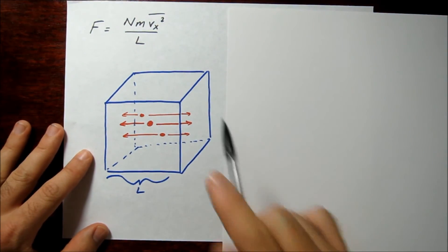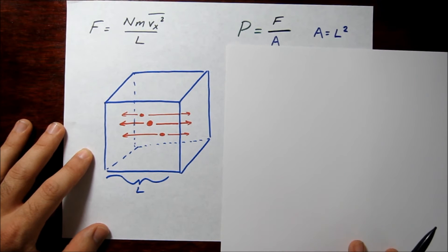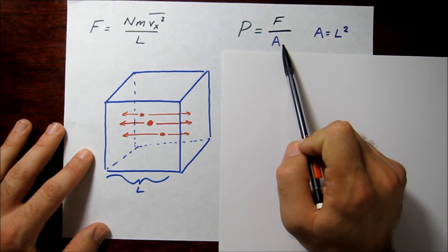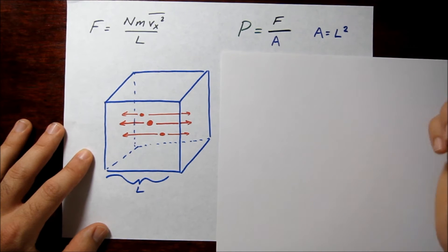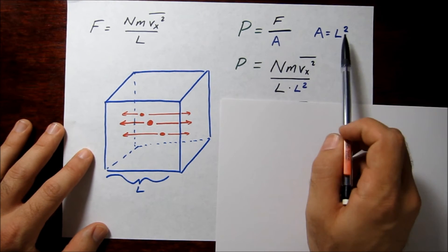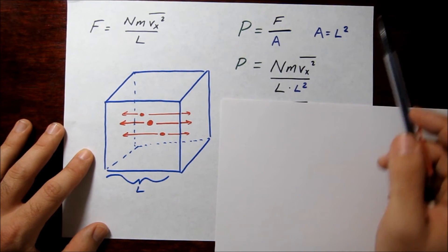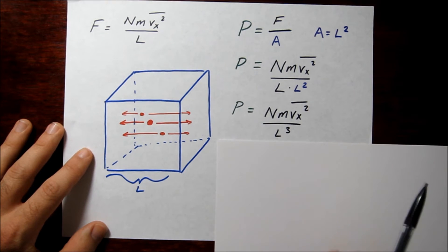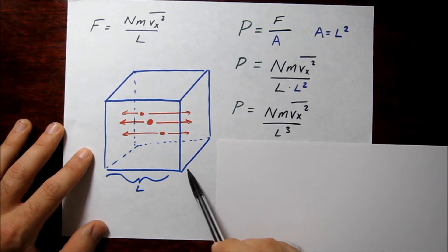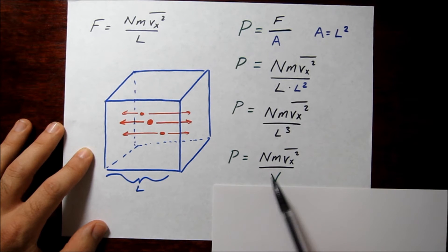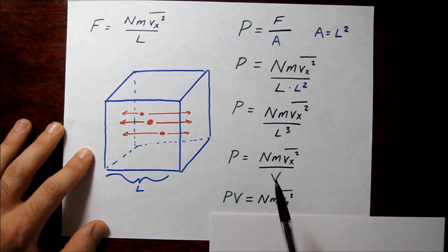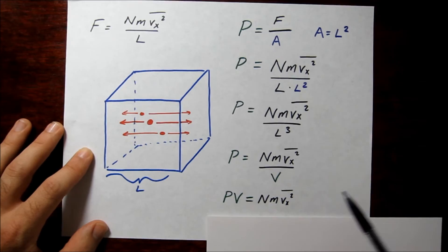Now we relate force to pressure. Pressure is defined as force per unit area. Since this is a cube of side length L, the area of any face is L squared. Substituting force and area into the pressure equation gives an L cubed in the denominator, and L cubed is simply the volume V of the cube. Multiplying both sides by V, we get PV on the left-hand side — we're about halfway to the ideal gas law.